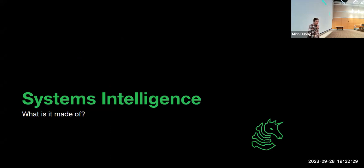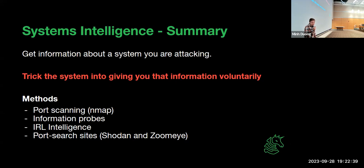First, let's talk about systems intelligence. That's knowledge about the individual computers, routers, etc. in an organization. Good systems intelligence is useful information about a system that you're attacking — any technical info that points you towards specific vulnerabilities or paths of attack. Gathering this information with OSINT won't really involve breaking in; instead, you get the information from the system sort of voluntarily. There are several useful techniques for systems OSINT.